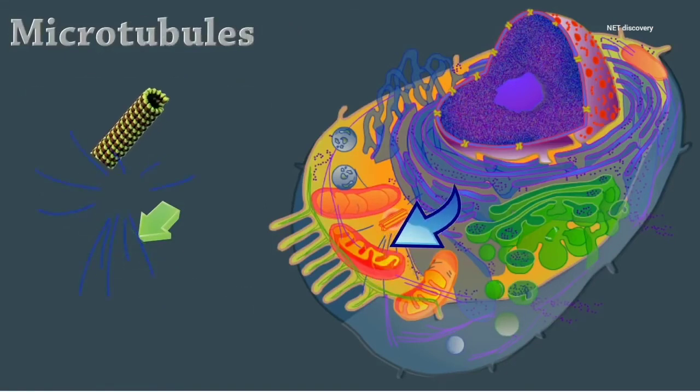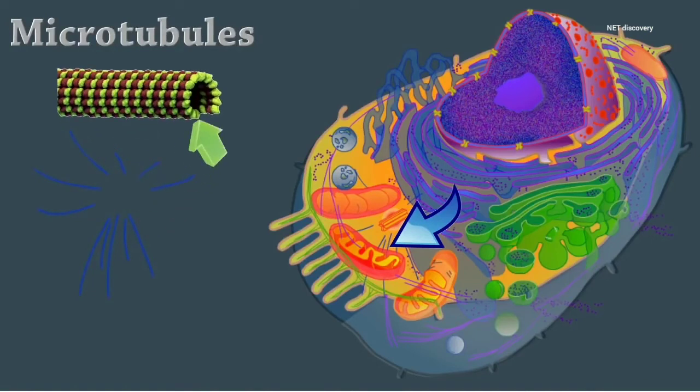Microtubules are cylindrical structures made of tubulin proteins. They support the cell and give it shape. They're involved in intracellular and cellular movements and form centrioles.